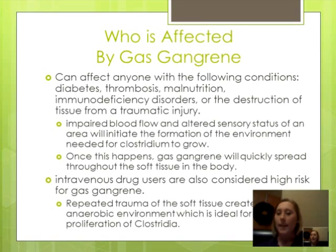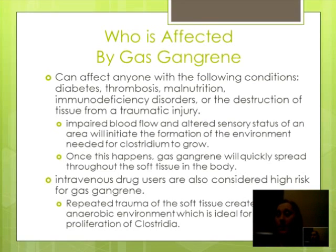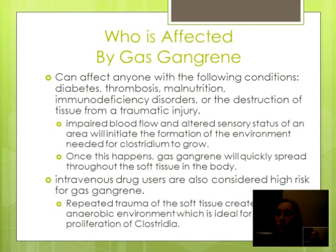Gas gangrene can affect anyone with the following conditions: diabetes, thrombosis, malnutrition, immunodeficiency disorders, or the destruction of soft tissue from a traumatic injury. The impaired blood flow and altered sensory status of an area will initiate the formation of the environment needed for clostridium to grow. Once this happens, gas gangrene will spread quickly throughout the soft tissue in the body. Intravenous drug users are also considered high risk for gangrene, as repeated trauma to the soft tissue creates an anaerobic environment for clostridia to grow.